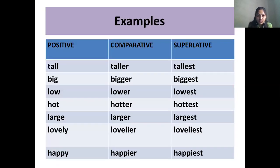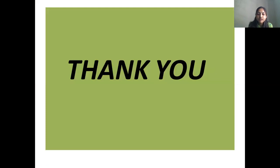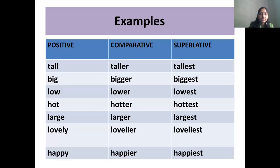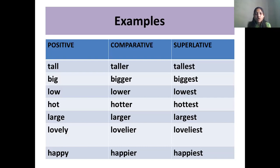Here are some examples of positive, comparative, and superlative degrees. Tall becomes taller and tallest. Big becomes bigger and biggest. Low becomes lower and lowest. Hot becomes hotter and hottest. Large becomes larger and largest. Lovely becomes lovelier and loveliest. Happy becomes happier and happiest.